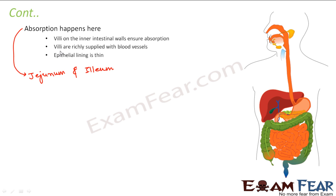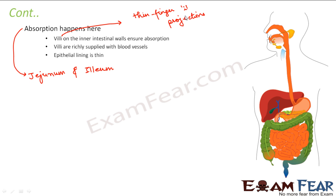Absorption in the jejunum and ileum is facilitated by villi on the inner intestinal walls. Villi are thin, finger-like projections — similar to cilia on paramecium — that increase the surface area for better absorption.